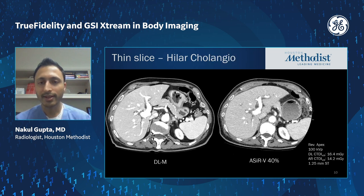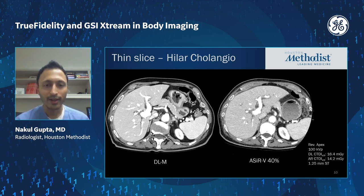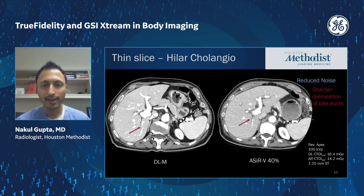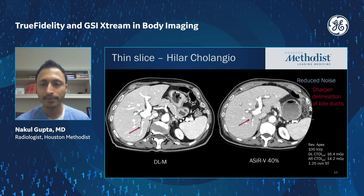Another example of a thin slice study for hepatic carcinoma staging. A patient with a prior study with ACERV at 40% shows that the subsequent follow-up scan with deep learning has lower noise overall, with a very natural feeling noise texture, and at the same time sharper delineation of these intrahepatic bile ducts.